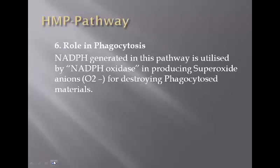The HMP pathway also plays a role in phagocytosis. The NADPH generated is utilized by the enzyme NADPH oxidase, which then produces superoxide anions involved in damaging phagocytosed materials. Thus, the HMP pathway is involved in the process of phagocytosis.